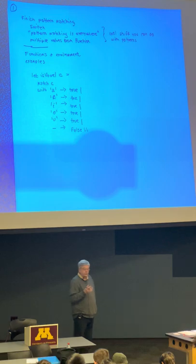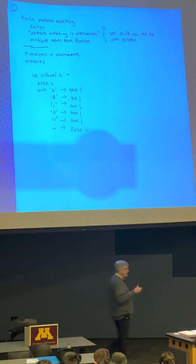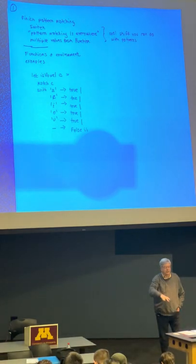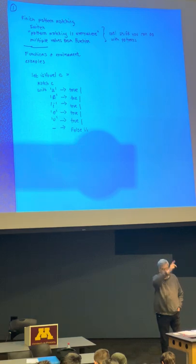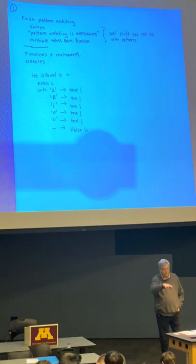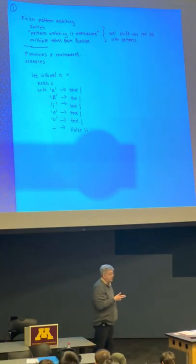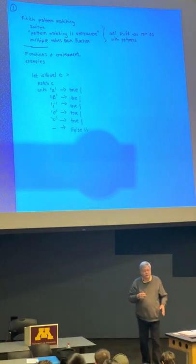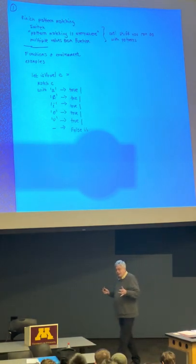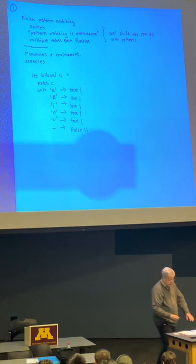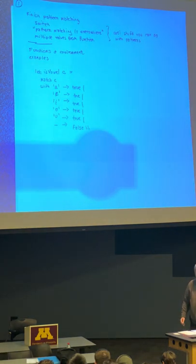The way a switch statement works in a language that has them is that the compiler figures out the address of the code that handles each possible branch. When it sees what it's supposed to match on, it just jumps to that address and executes the code there — it doesn't have to do a series of comparisons. So an OCaml compiler could do the same thing, making this potentially very fast even with a hundred different simple branches.